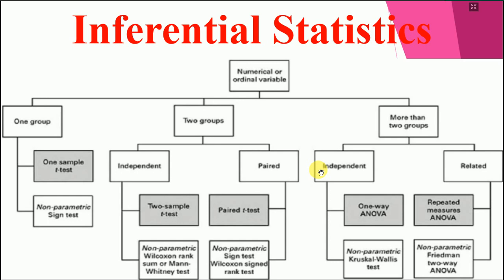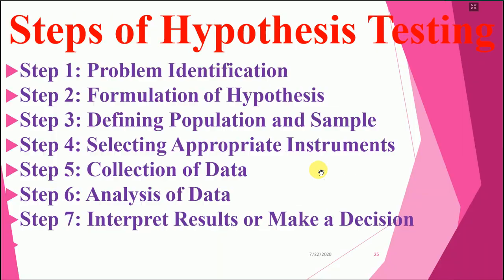This is the inferential statistics you studied in the previous session. This slide covers the steps for hypothesis testing and research: first, problem identification; second, formulation of hypothesis; third, defining population and sample; fourth, selecting appropriate instrument; fifth, collection of data; sixth, analysis of data; seventh, interpret results and make a decision.